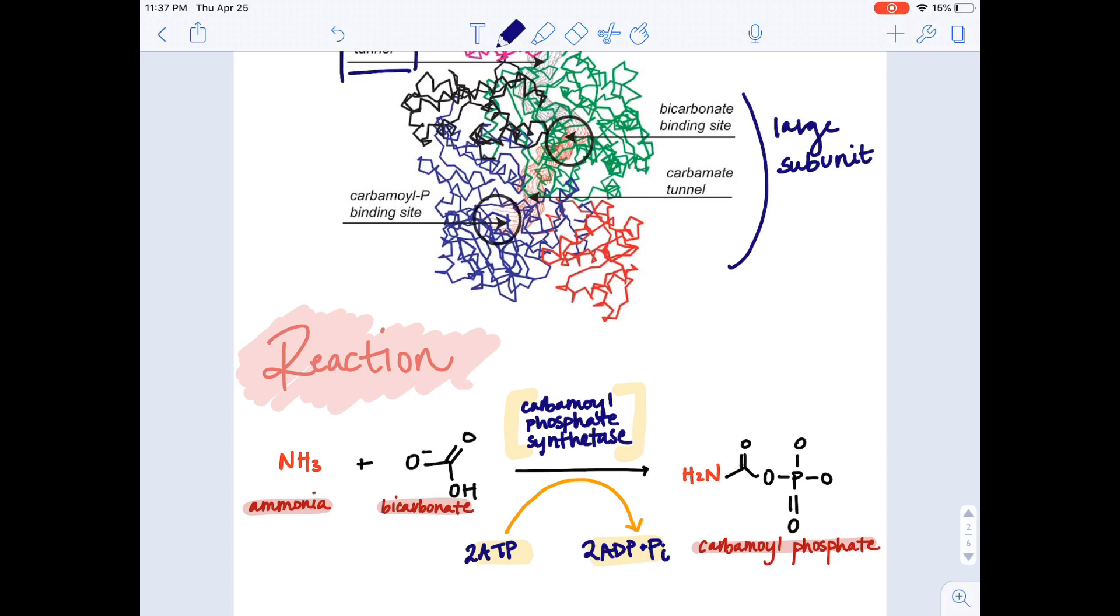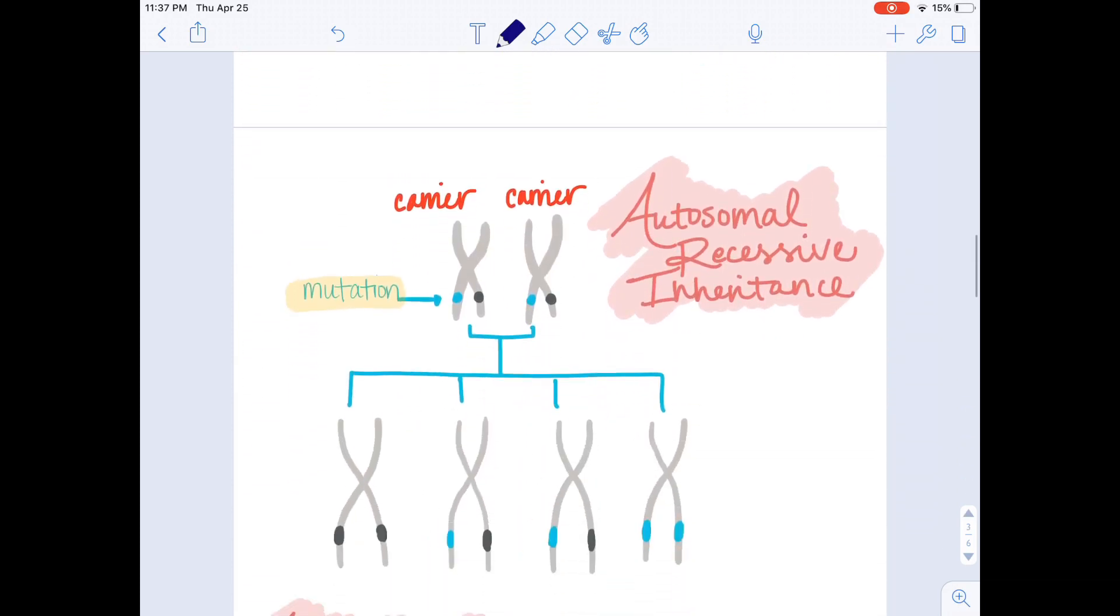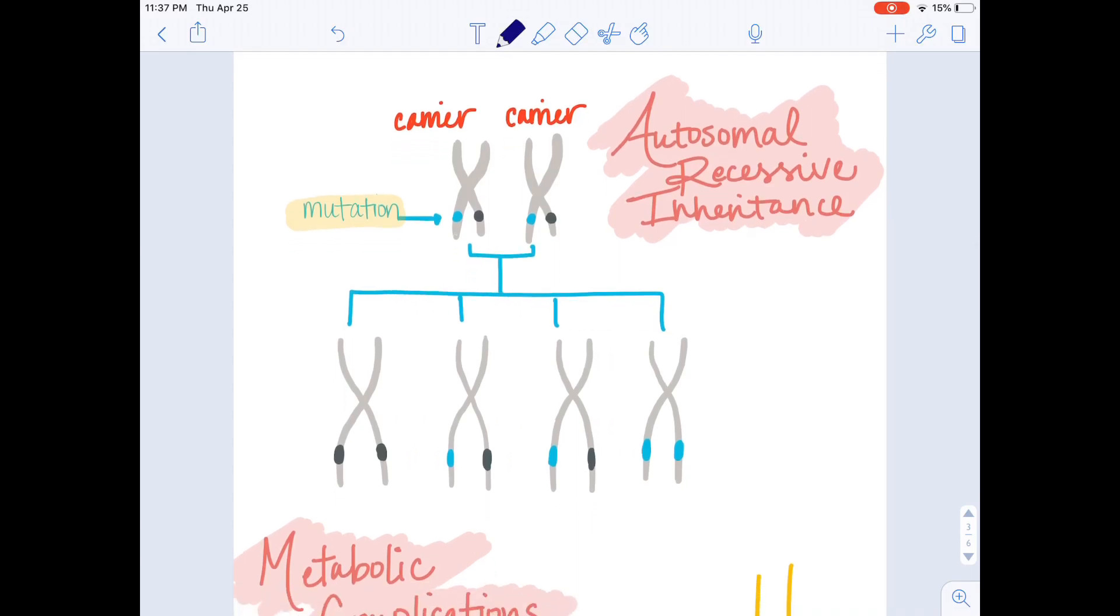Carbamoyl phosphate is created when a second molecule of ATP is able to phosphorylate carbamic acid, thus completing the reaction. This deficiency has an autosomal recessive pattern of inheritance, which means that the mutation is found in both copies of the gene. It is caused by mutations in the CPS1 gene.